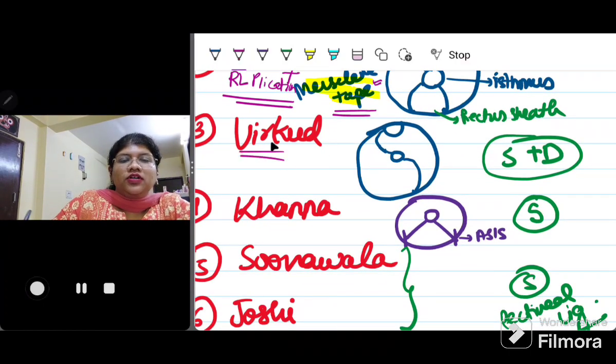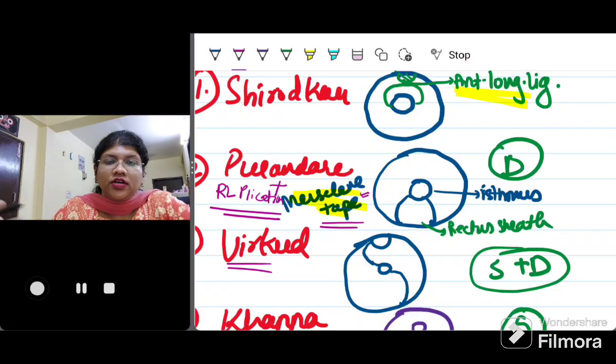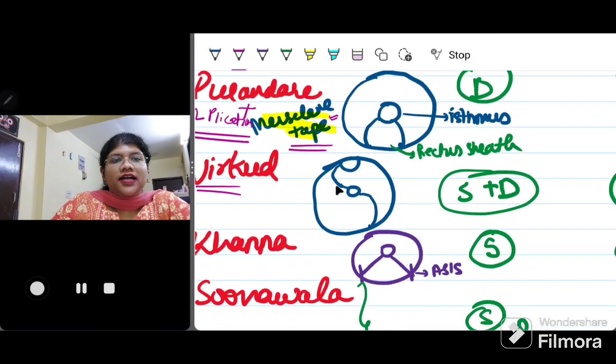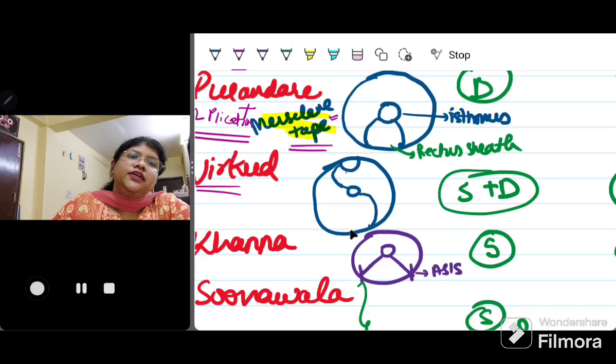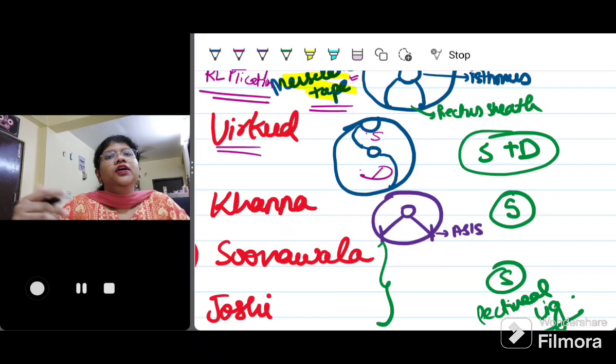Next is the Virkud. In Virkud sling surgery, it combines the advantages of both Shirodkar and Purandare. Right side, the sling is attached posteriorly, that is to the sacrum, the anterior longitudinal ligament, and anteriorly it is attached to the rectus sheath, that is on the left side. Right side, posterior sling, left side, anterior sling. If you can see, this is an open loop, so it is an open sling. It is static plus dynamic. This is your static component, this is your dynamic component, and it is an open type of sling with both anterior and posterior sling. Virkud is a very good surgery where you are able to combine the advantages of both Shirodkar and Purandare.